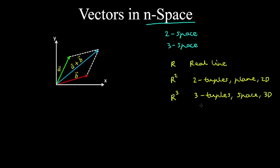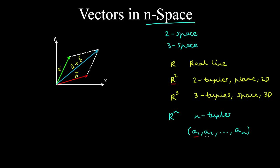Extending this idea to Rⁿ, or n-space, we have the set of all ordered n-tuples — a sequence of real numbers a₁, a₂, up to aₙ. For example, our sequence of numbers in 2-space is a₁, a₂.